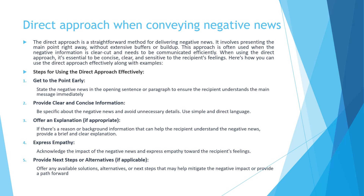The third step is to offer an explanation if appropriate. If there's a reason or background information that can help the recipient understand the negative news, provide a brief and clear explanation. For example: 'We received many applications and while your qualifications are impressive, the selected candidate had more experience in the specific area we're focusing on.' A brief rationale can help the recipient understand the context of the negative news, making it easier to accept.